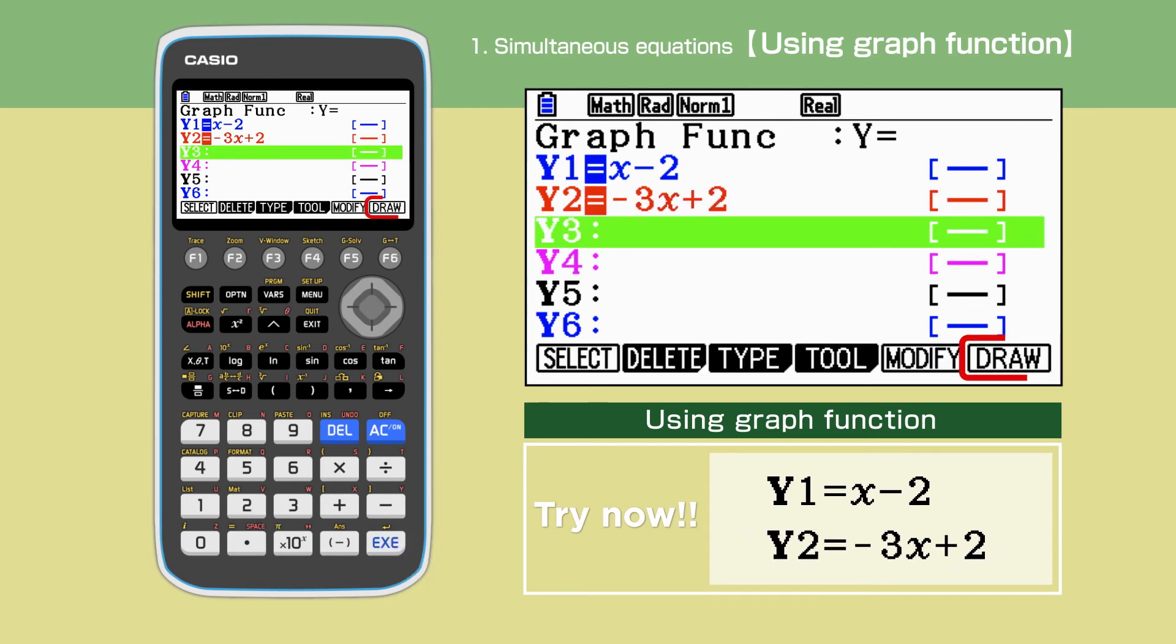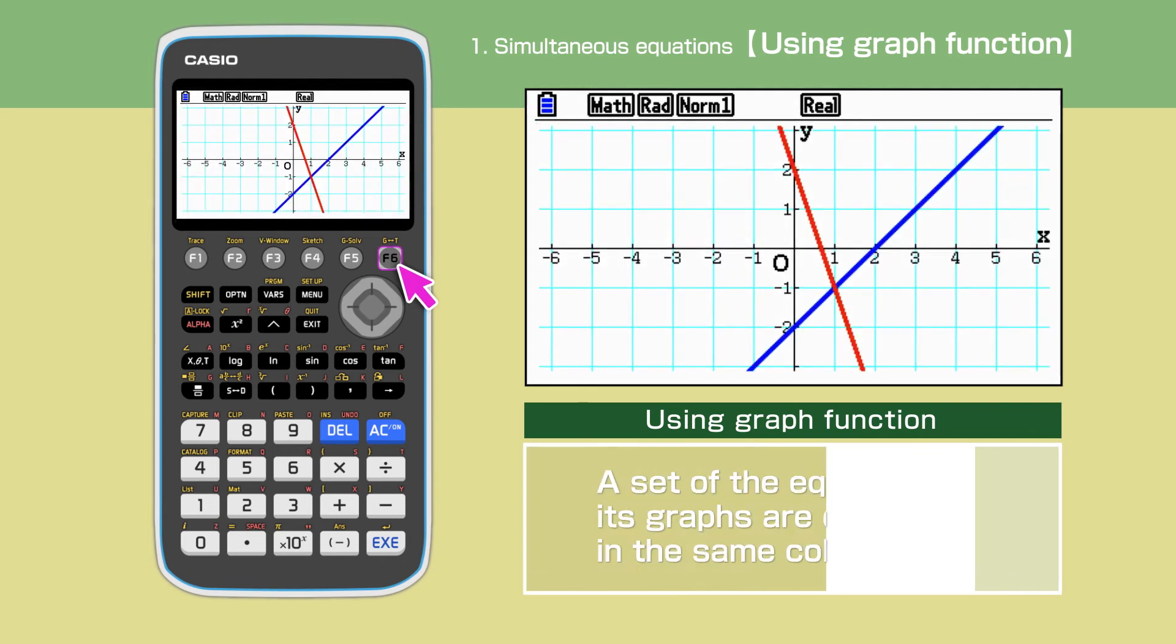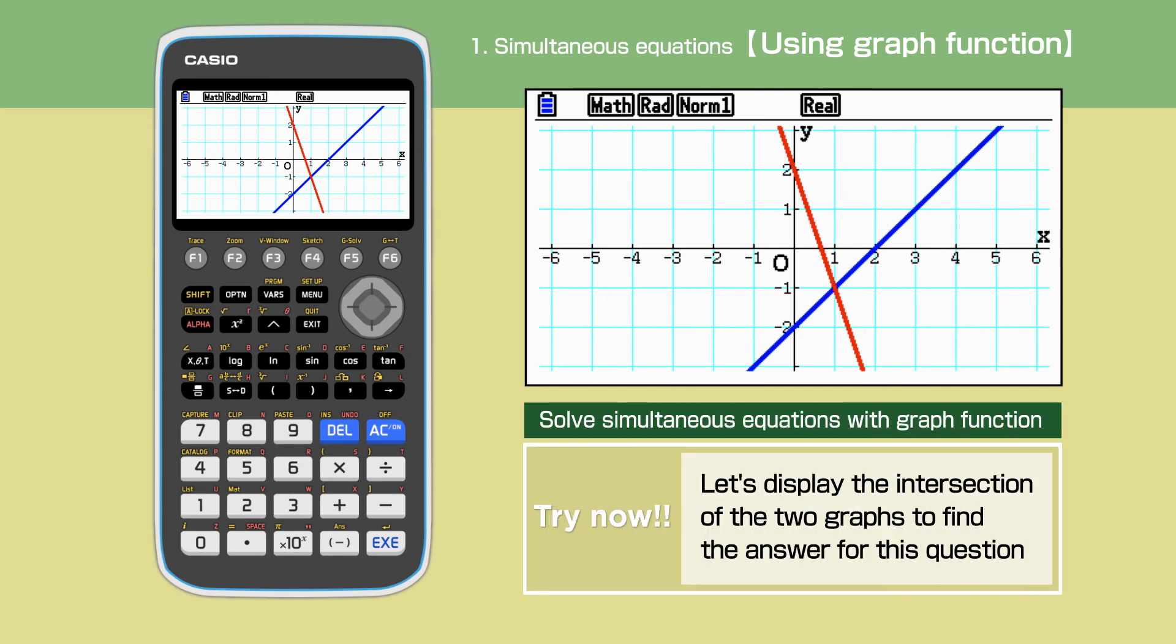Press F6 to draw the graphs. The two graphs are drawn on the same screen. The intersection of the graphs is the answer for this question.